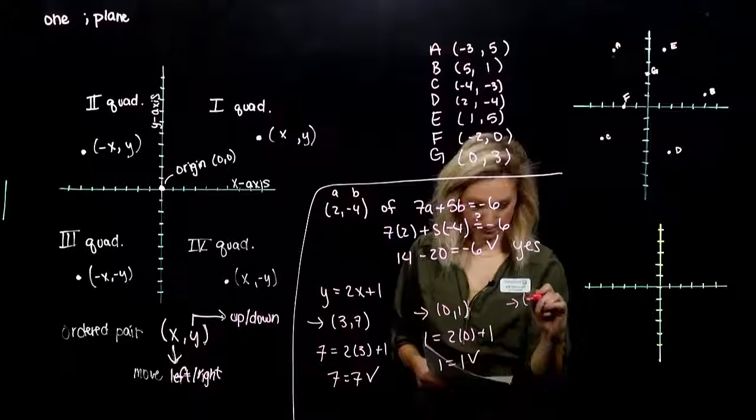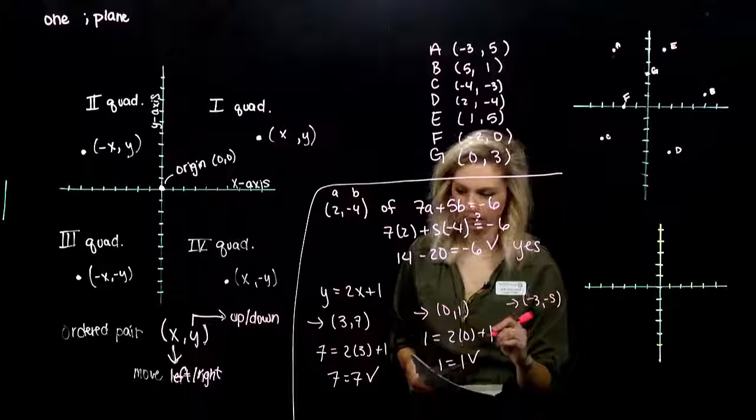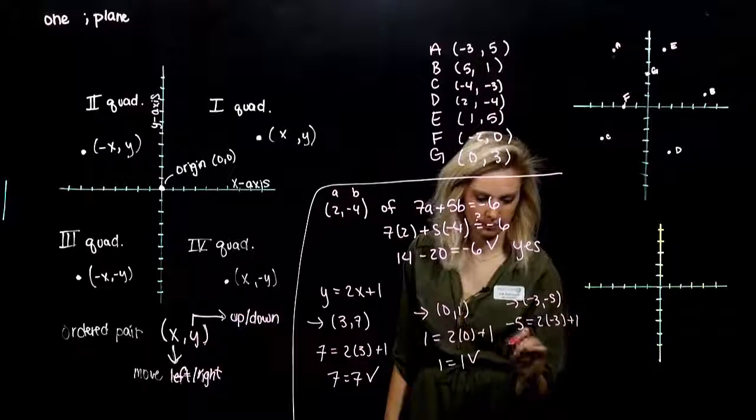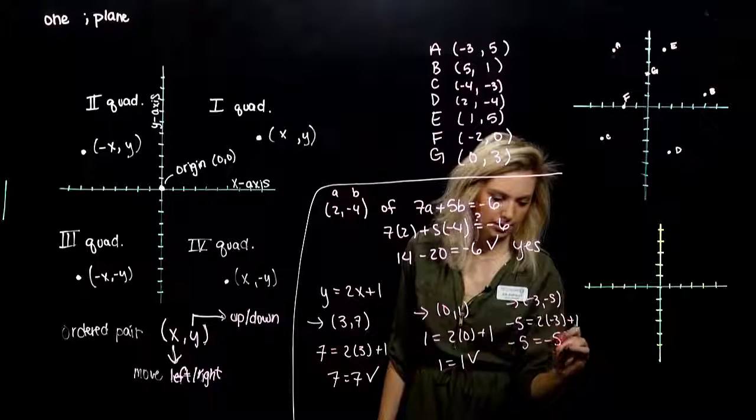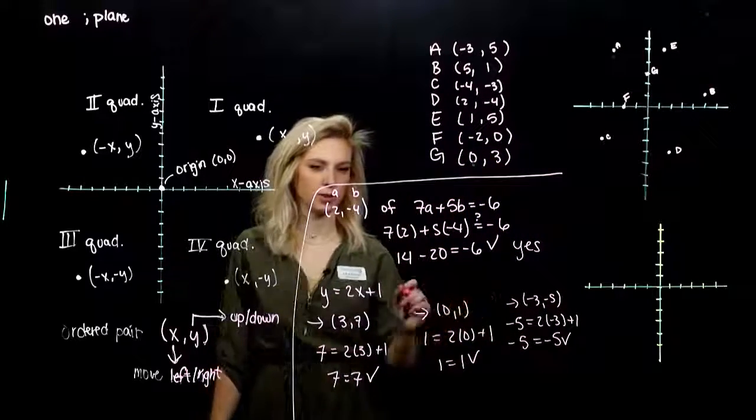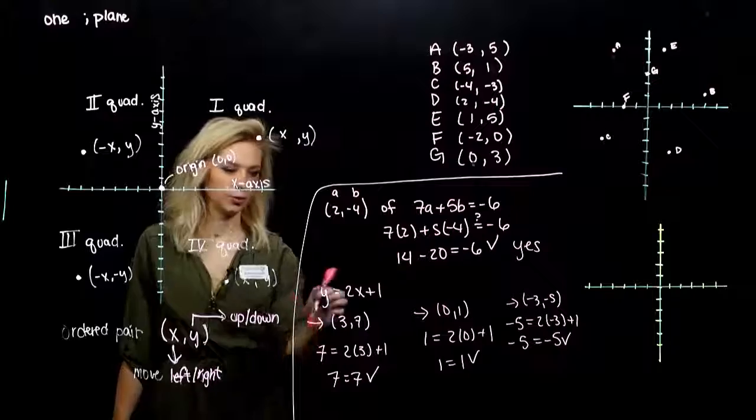And last, minus 3, minus 5. So minus 5, is that equal to 2 times minus 3 plus 1? It sure is. So we know that these three different points are a solution to this line.